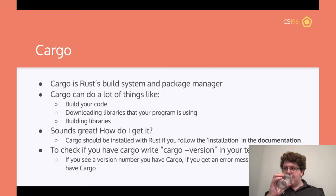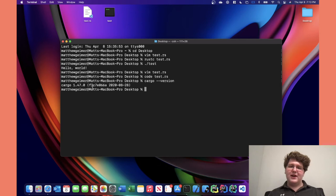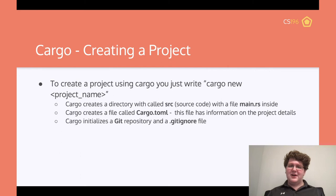Let's talk about Cargo — not cargo on a ship, but Cargo, the project management tool for Rust. Cargo is Rust's build system and package manager. It can build your code, download libraries, build libraries, and all kinds of other things. Cargo should be installed with Rust if you follow the installation in the documentation properly. To double check, run cargo --version. To create a project, go to whatever directory you want, do cargo new and then the project name, and it will create a directory.